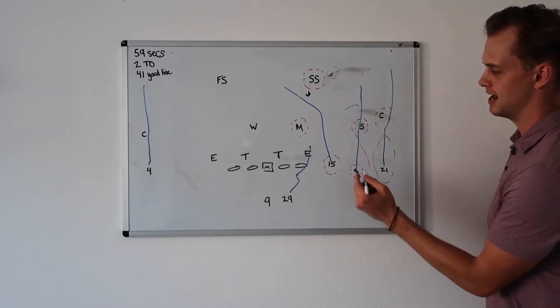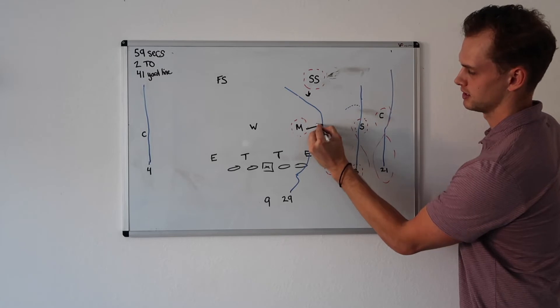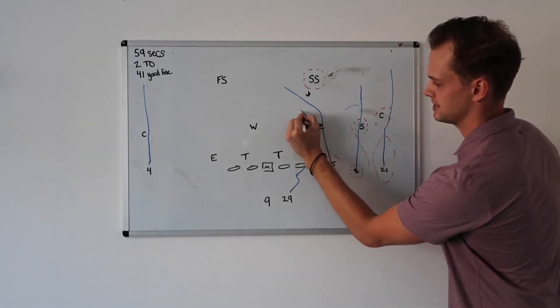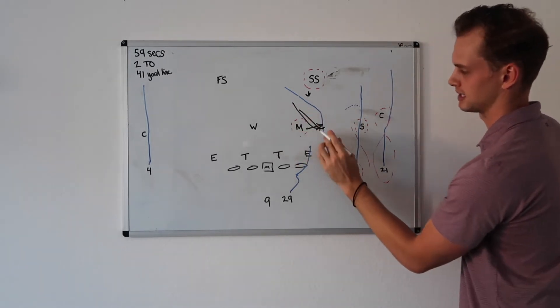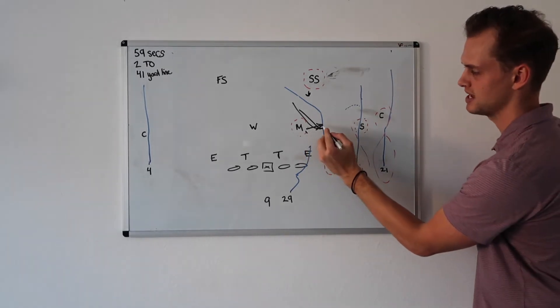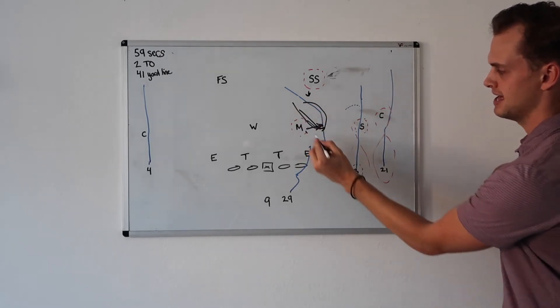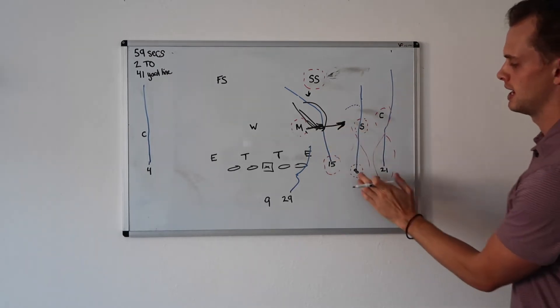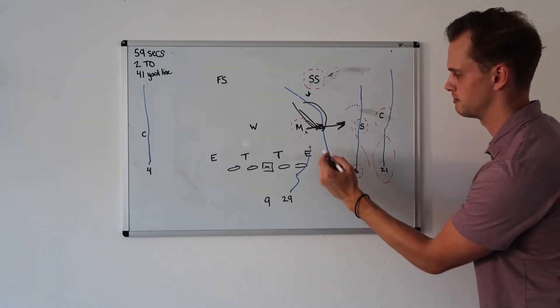And as we see this play play out, Drake London presses vertical. This Mike linebacker looks to get hands on. Drake makes this play by crossing the face of the Mike linebacker. Mike linebacker drops. He goes underneath this Mike linebacker. Why is that important? Because the Mike is forced to put hands on by his rules and he's forced to stick on Drake London. Good coaching, good execution by Drake.